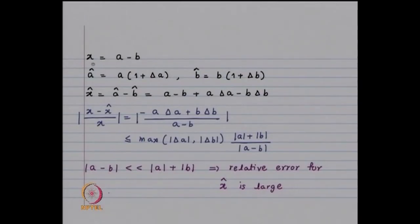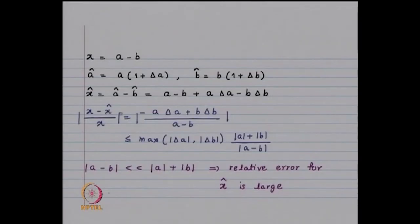Consider the subtraction x = a - b where these are the exact values, and â is the perturbed value: â = a(1 + δa), b̂ = b(1 + δb). The computed result is x̂ = â - b̂ = (a - b) + a·δa - b·δb. Hence the relative error is (x - x̂)/x = (-a·δa + b·δb)/(a - b), which is less than or equal to max(|δa|, |δb|) × (|a| + |b|) / |a - b|.